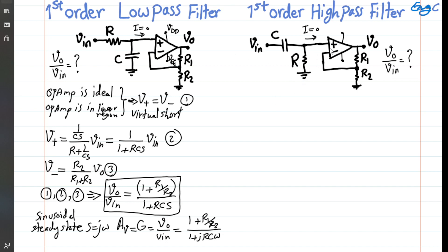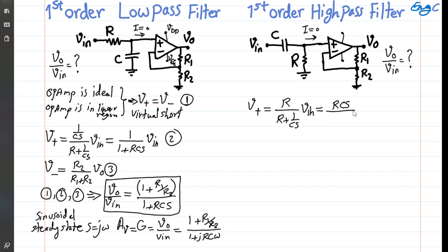For the circuit on the right side — the high-pass filter — we follow the same procedure. Since the op-amp is properly biased, in negative feedback, and operating in its linear region (not saturated), equation one still holds. For the positive terminal, no current flows, so we write a voltage division between R and C: V-positive equals R over (R plus 1/Cs) times Vin, which simplifies to RCs divided by (1 plus RCs) times Vin. This is equation 2a.